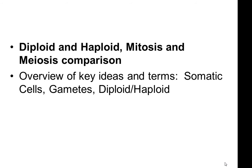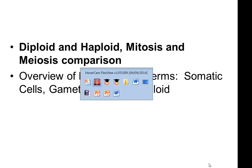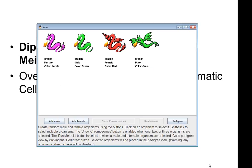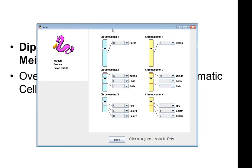In this video, I want to explore the terms diploid and haploid. So let's look at these dragons. You'll see it has three homologous pairs, or six total. Its diploid number would be six, and its haploid number would be three.